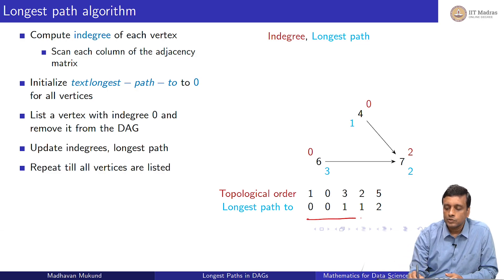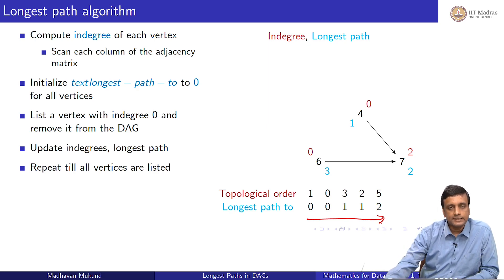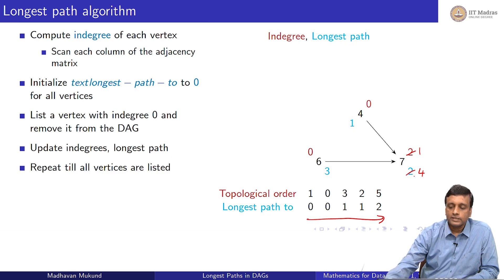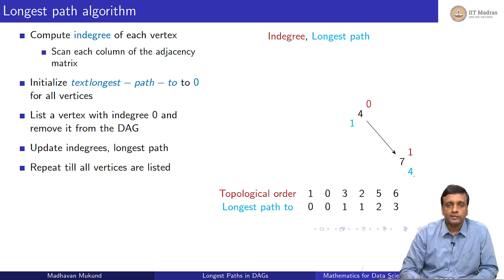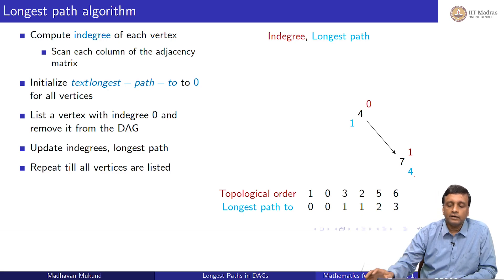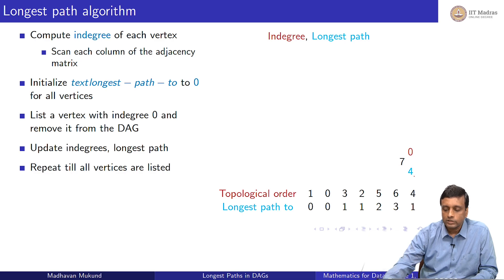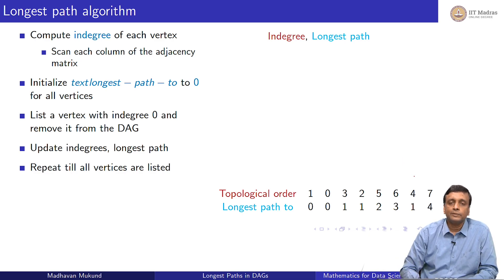As we enumerate the vertices, we also enumerate their finalized longest paths. Next we process vertex 6: when we remove 6, vertex 7 jumps from longest path 2 to longest path 4, because we have discovered a path of length 3 coming up to 6, one of 7's incoming neighbors. But we cannot enumerate 7 yet because its in-degree is not yet 0. Finally, when we output vertex 4, the in-degree of 7 becomes 0, but there is no change to its longest path since it already came through 6. So finally we list out 7 and have the longest path for every vertex.